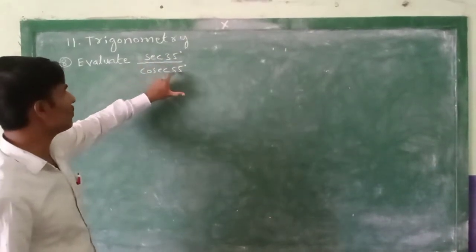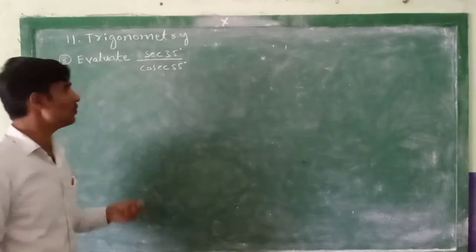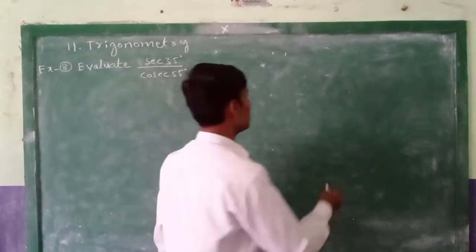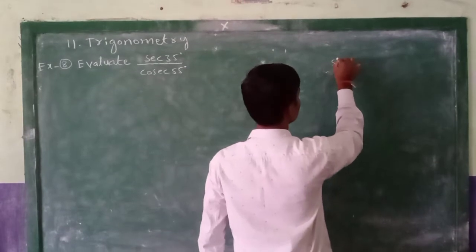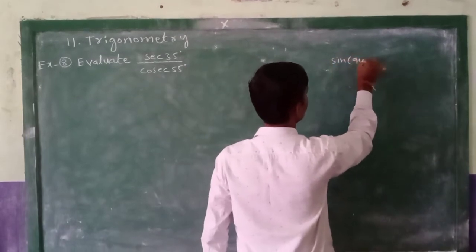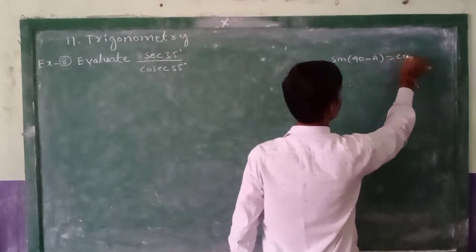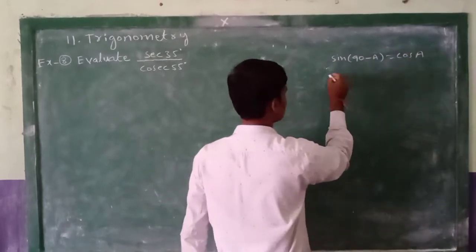divided by cosecant 55 degrees. I am writing here: sin(90-a) = cos a, next cos(90-a) = sin a